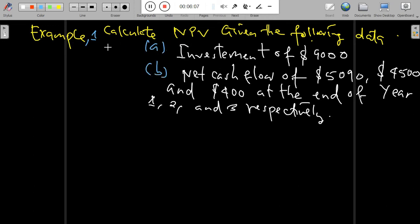We are required to calculate the net present value given the following data: an initial investment of $9,000 and net cash flows of $5,090, $4,500, and $4,000 at the end of year 1, year 2, and year 3 respectively.